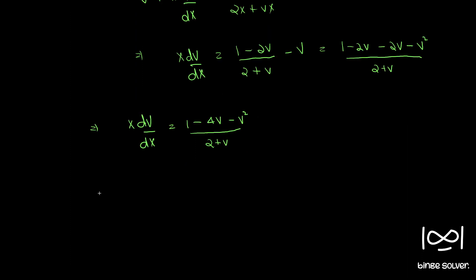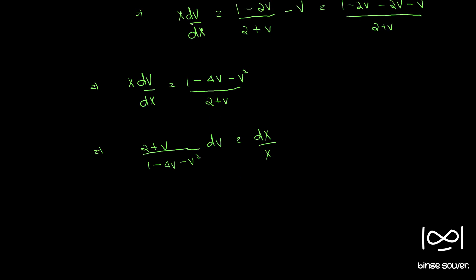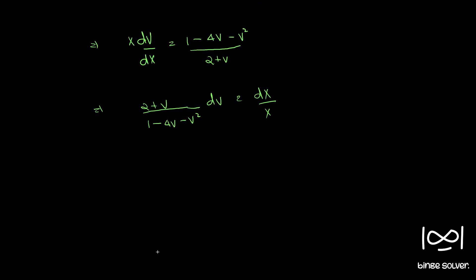Bringing all terms of v to one side and X to the other, we get (2 plus v) dv by (1 minus 4v minus v squared) equal to dX by X.